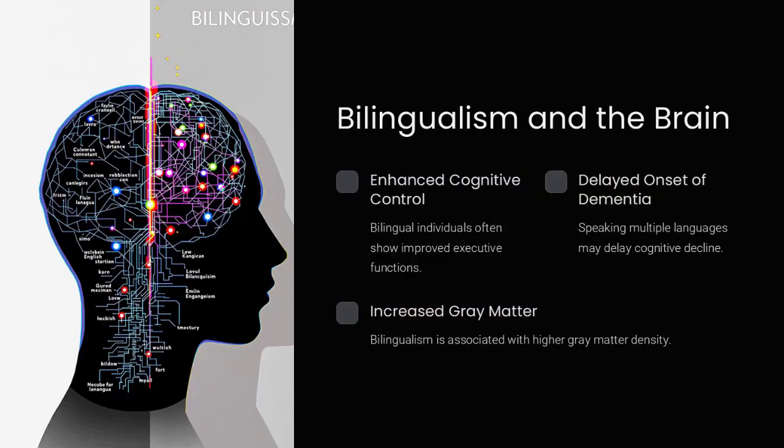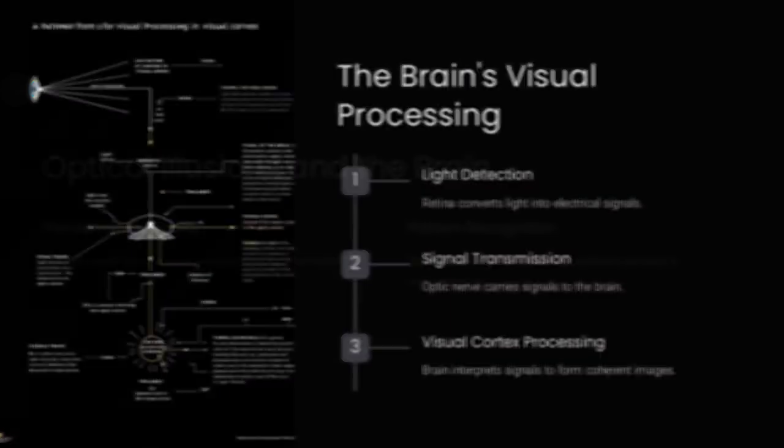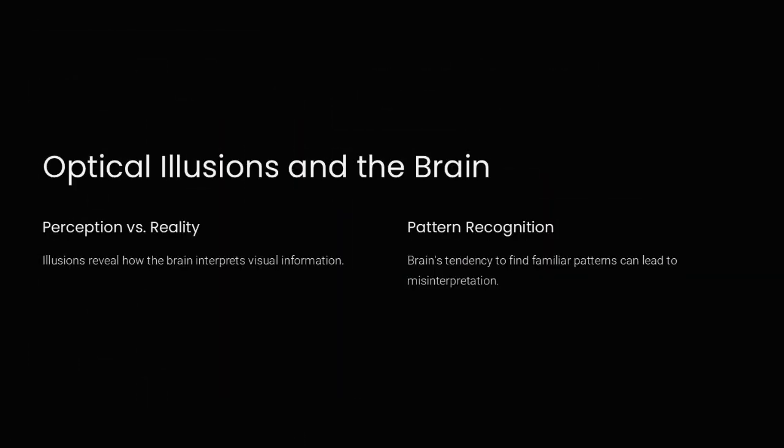So could we ever surpass these limits? Brain-computer interfaces, neural implants, and AI augmentation are pushing the boundaries of human cognition, but even these technologies must work within the constraints of biology.